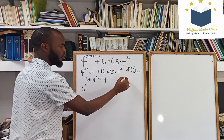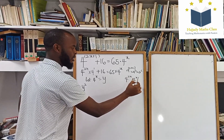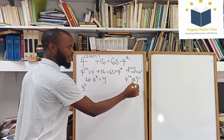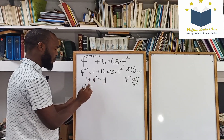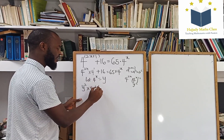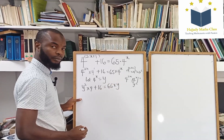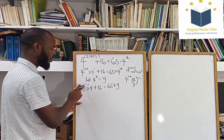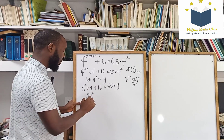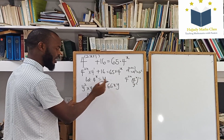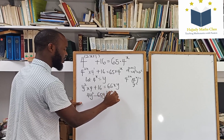I'm having 4 to the power of 2x, which is the same thing as 4 to the power of x, all squared. So that's how I got my y squared times 4 plus 16 equals 65 times y. Bringing this down, I'm going to have 4y squared minus 65y plus 16 equals 0.